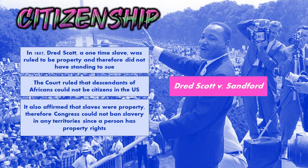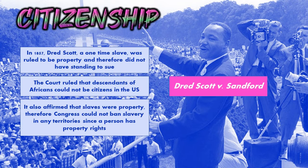We're going to start at a real low point. We're going to focus on citizenship development first, and we're going to start with the worst decision of our Supreme Court in 1857. The Dred Scott versus Sanford case, decided right before the Civil War. Dred Scott had been enslaved in a state with slavery, and then he was taken to Illinois, which was a free state.